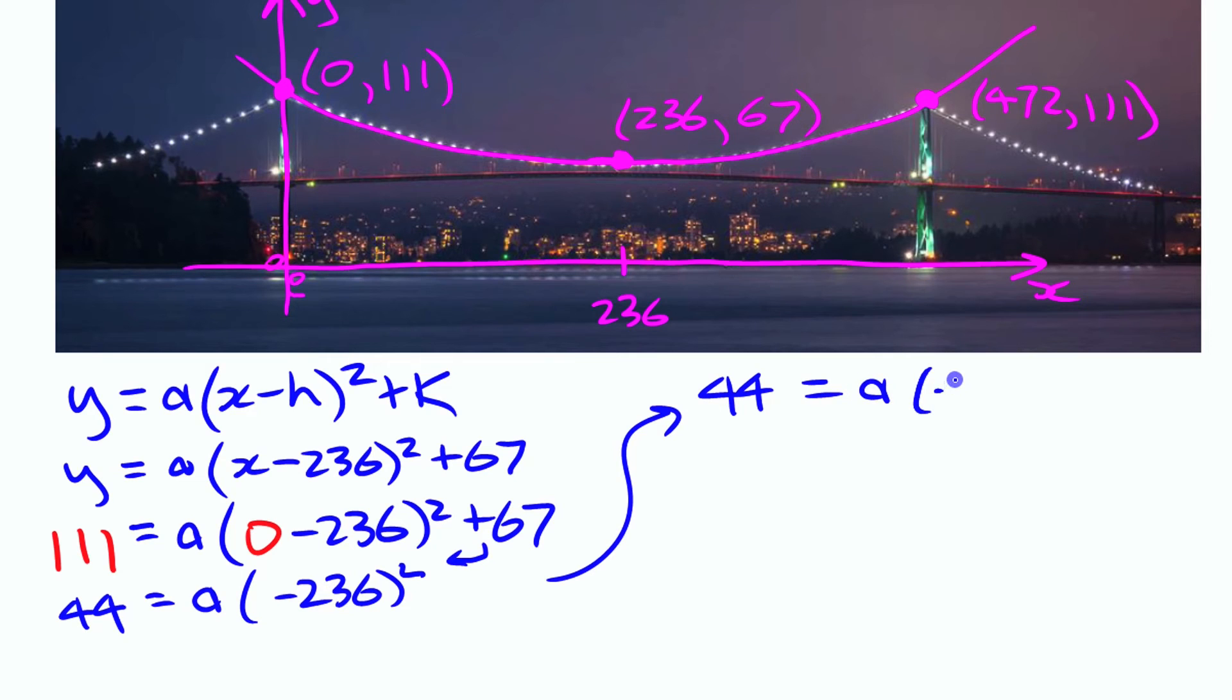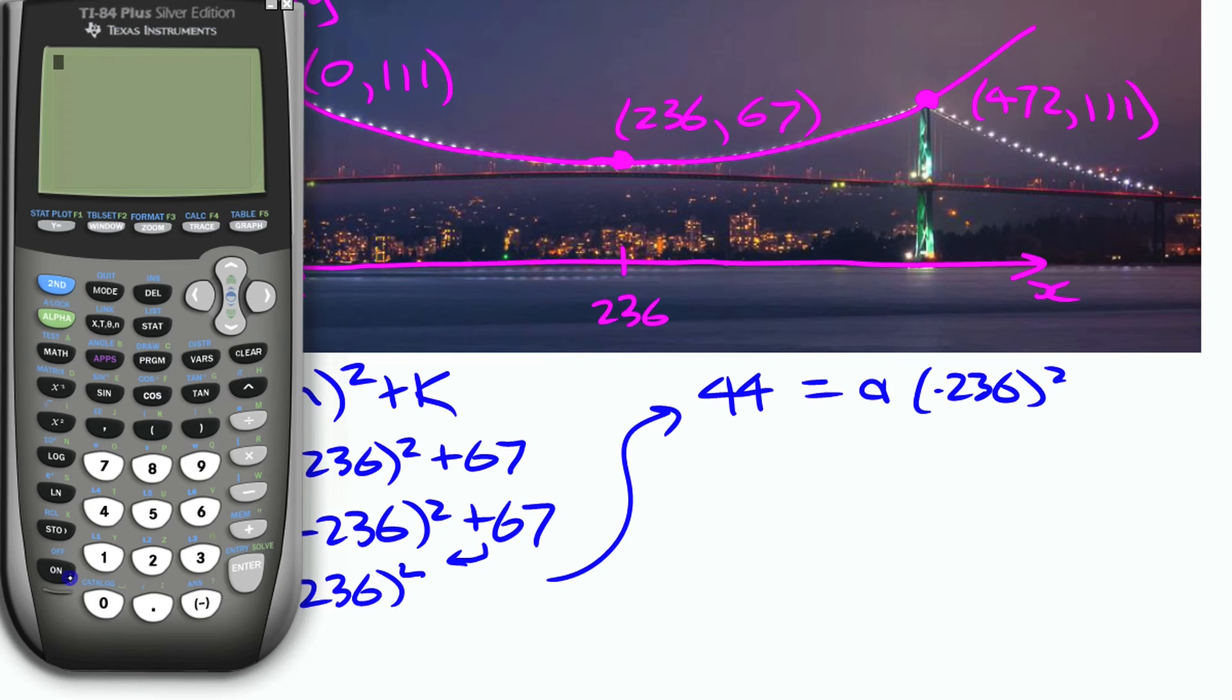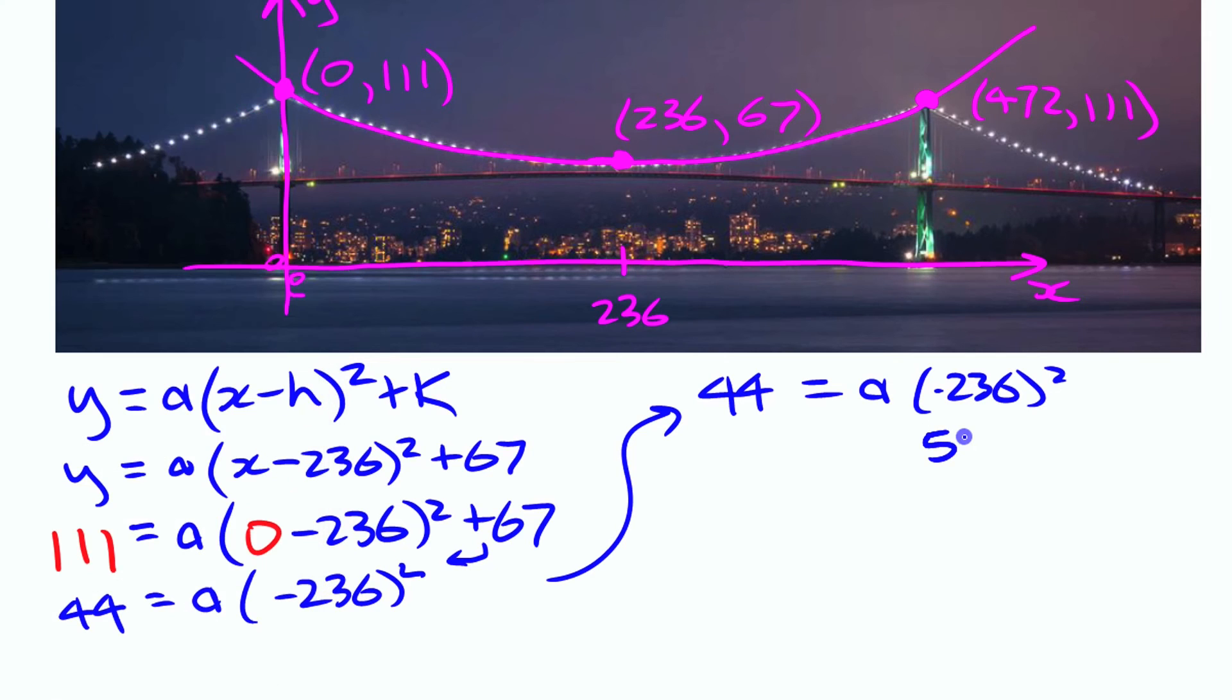a times (-236)². We'll get the calculator out for that: 236 squared is 55,696.